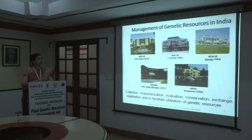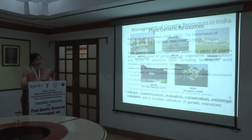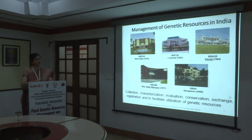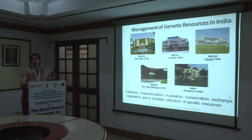There are five major institutes in India under the umbrella of ICAR involved in management of genetic resources. NB-PGR is for plant genetic resources, NB-FGR for fish genetic resources, NB-AGR in Karnal for animal genetic resources, NB-AIM for agriculturally important microorganisms, and NB-AII for insects. All of these, though working with different organisms, are involved with collection, characterization, evaluation, conservation, exchange, registration, and facilitation of utilization of each genetic resource.